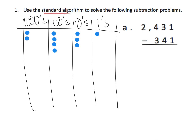Now it's time to subtract. When using a place value chart, you can subtract left to right, right to left, or from the inside out — it doesn't really matter. But because we are guiding students towards the standard algorithm, I'm going to go from right to left. Looking at the ones column, we have 1 one and need to take away 1 one. Well, we have enough, so we take away 1 one and we're left with zero ones. In the standard algorithm, that looks like: 1 take away 1 gives us 0.